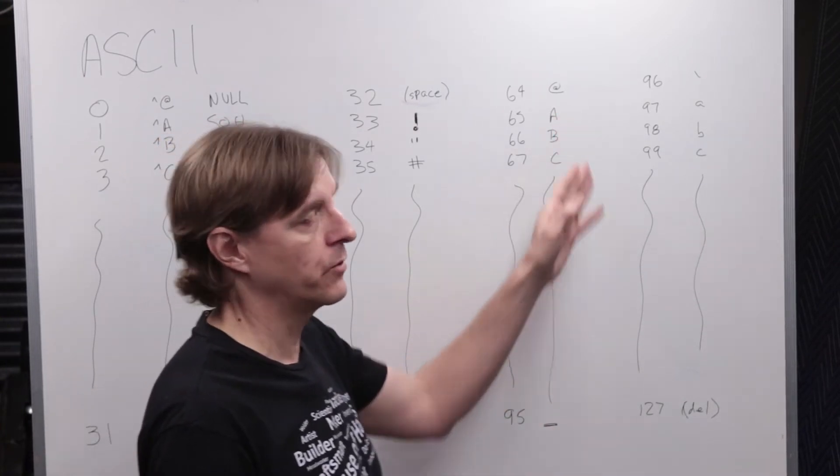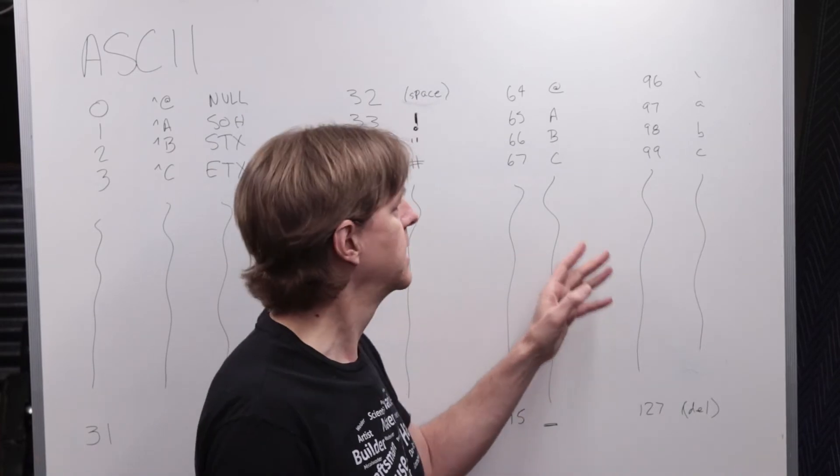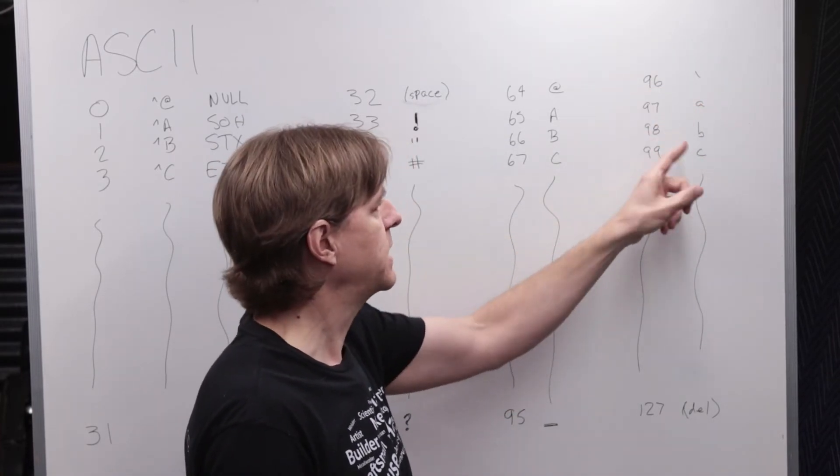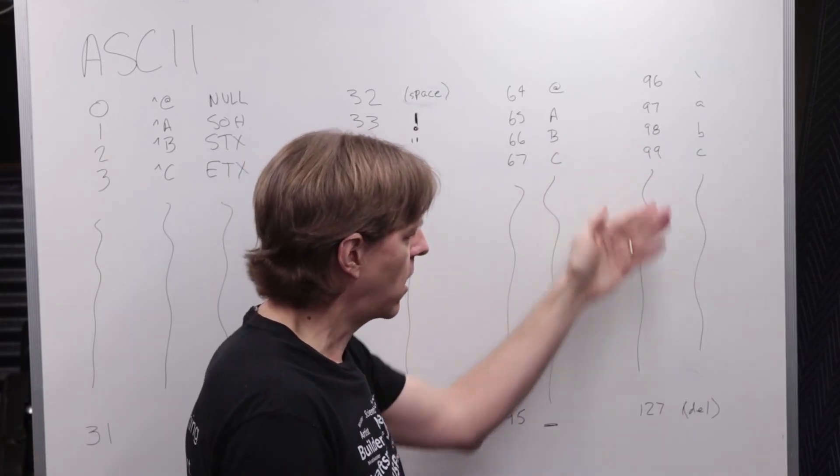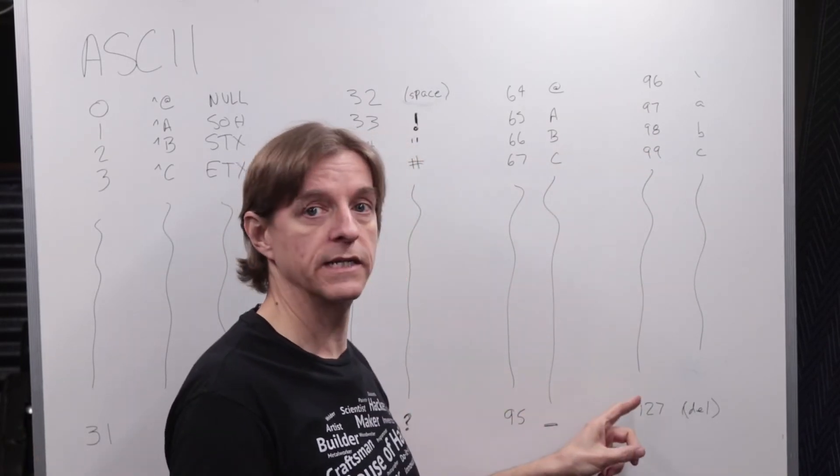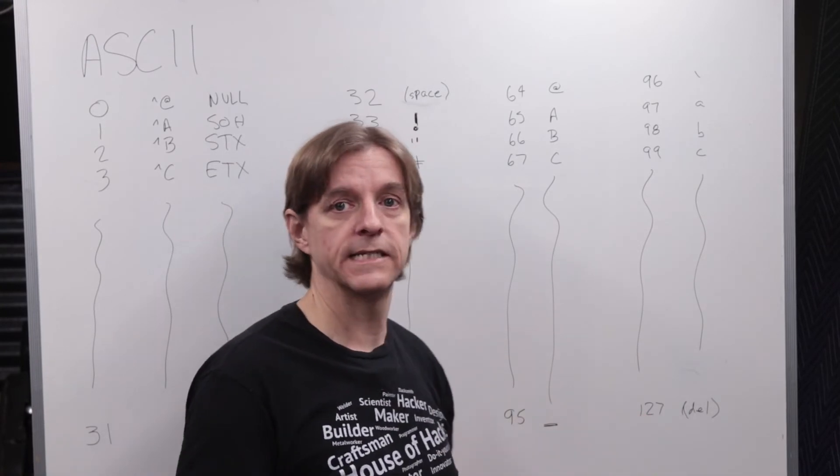And the final group of 32 were the lowercase characters. It started with a back accent character, A, B, C being defined as 97, 98, and 99, continuing on down to 127 which was treated as delete character.